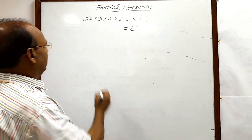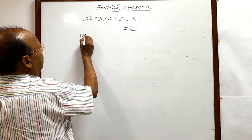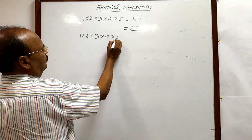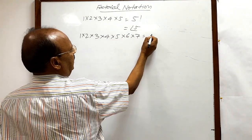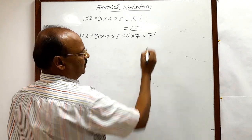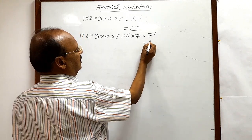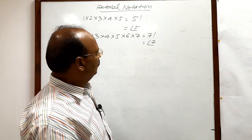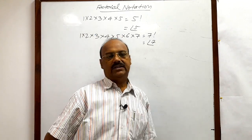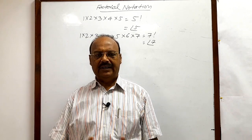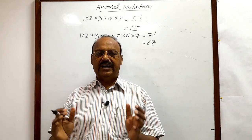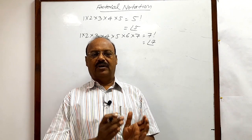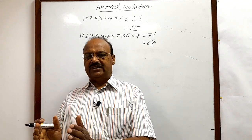Similarly, if you multiply the first 7 natural numbers — 1 × 2 × 3 × 4 × 5 × 6 × 7 — then this is 7 factorial, or we can write it as factorial 7. So I hope you have understood that the factorial of a natural number is a continued product of natural numbers starting from 1 up to that natural number.